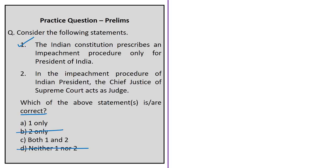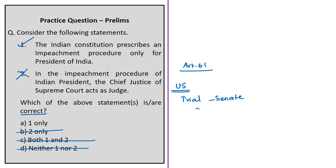Statement 2 states: 'In the impeachment procedure for the Indian President, the Chief Justice of the Supreme Court acts as judge.' This is incorrect — according to Article 61, the Chief Justice of the Supreme Court has no role to play. In the US, however, the Chief Justice of the US Supreme Court does act as judge in the Senate impeachment trial. So the correct answer is Option A — Statement 1 only.